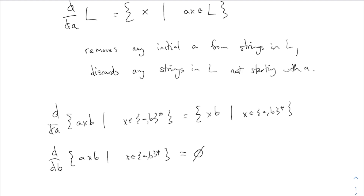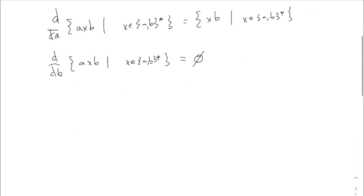How about the derivative with respect to 'a' of all strings x where x can be anything — that is, (ab)*? This one's a little weird. This is just all strings on a's and b's. The ones which start with 'a', you throw the 'a' away and give what's left. The ones that start with 'b', you get rid of them entirely, because it's a derivative with respect to 'a'. What set are you left with?